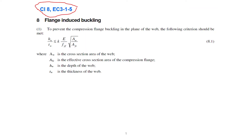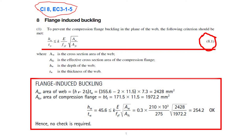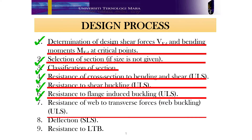Therefore, for our example, by applying equation 8.1 in Clause 8, EC3 part 1.5, it has been determined that the proposed UB section has met the criterion given in equation 8.1, as shown in the calculation in the red box. We have now completed step number 6, that is the resistance to flange induced buckling. Lastly, we need to check for resistance of the web to transverse force.